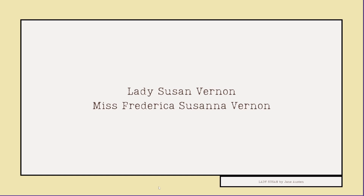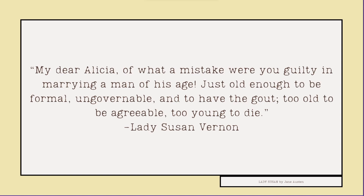This is something that is true throughout time — when we have selfish people acting out their own desires and people not taking into account the whole picture, they are easily led astray by selfish people. We see this in a quote: 'My dear Alicia, of what a mistake you were guilty in marrying a man of his age — just old enough to be formal, ungovernable, and to have the gout, too old to be agreeable, too young to die.' This is the mindset of Lady Susan — everybody is a means to get what she wants.